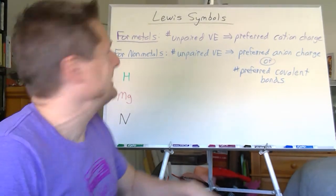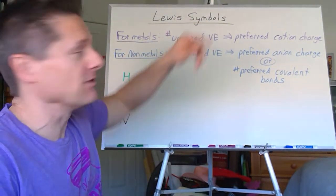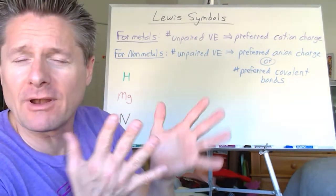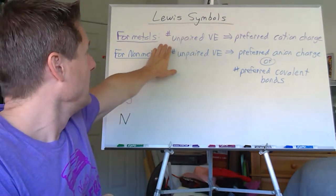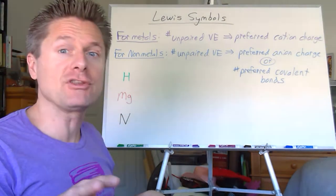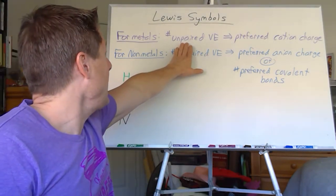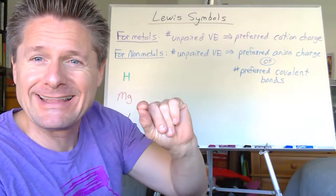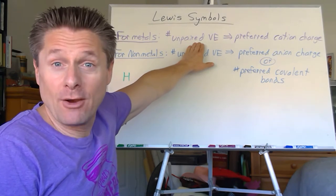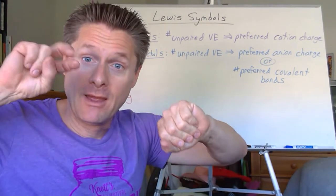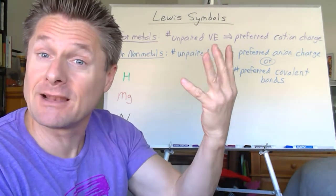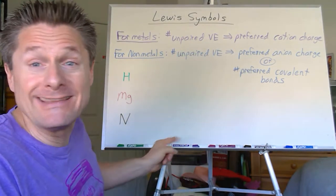Let's play around with these atomic dot symbols — electron dot symbols, Lewis symbols, whatever you want to call them. A couple of useful, not perfect, but nice rules of thumb for main group elements. If you look at the Lewis symbol for a metal and you see unpaired electrons, that number of unpaired electrons tells you the number of valence electrons it wants to lose, giving the preferred cation charge. We'll do hydrogen, magnesium, and nitrogen to show you.